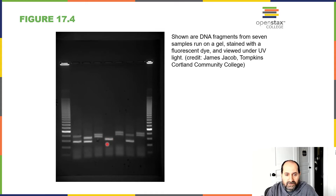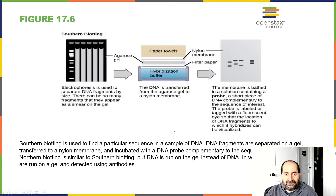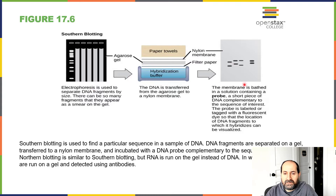This band on the gel would be the fragment we amplified. So what I want you to know about PCR, or polymerase chain reaction, is that it is a technique scientists can use to amplify a segment of DNA so that they can study it. Here's another interesting technique called southern blotting. In southern blotting, you're able to visualize segments of DNA on a gel using a probe and a nylon membrane.